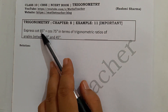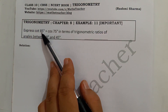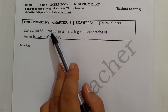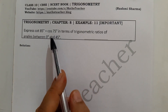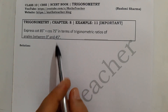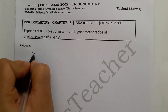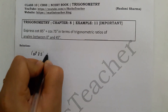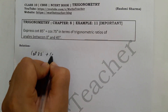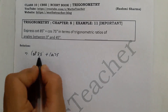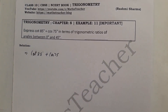We know the values for 0°, 30°, 45°, 60°, 90°, but we don't know 85° and 75°. So we use complementary angles to solve it. What we have given here is cot 85° plus cot 75°, and we need to change these angles.